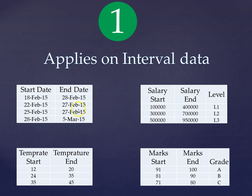Another example can be the production schedule run. For example, if there is a production company for whom the schedule is running from 18 Feb to 28 Feb or 22 Feb to 27 Feb, then this is an example of interval data. Another example on the right-hand side is salary start date and end date, where salary start date and end date are related to the different types of levels that we have in a company.